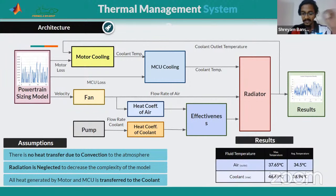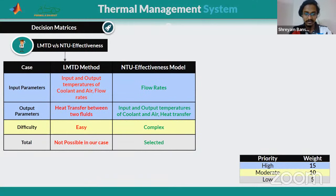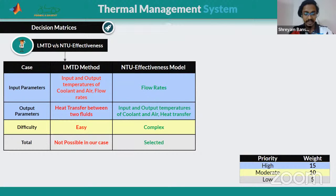The results calculated using the Simulink model show that both coolant temperatures for motor and motor controller came out to be less than 50 degrees, within the optimal range. There are two methods to calculate the heat transfer coefficient: the LMTD method and the NTU-effectiveness method. We did not use LMTD because it requires knowing all four temperatures — inlet and outlet for both coolant and air — which was not possible in our case. So we used the NTU-effectiveness model, which requires only flow rates.